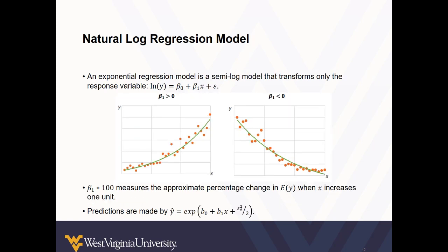And yet, another type of log model is the exponential regression model, which is a semi-log model that transforms only the response variable. In this scenario, beta 1 times 100 measures the approximate percentage change in the expected value of y when x increases by 1 unit.